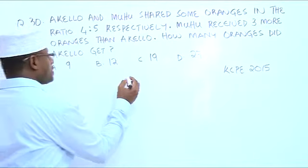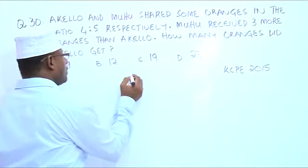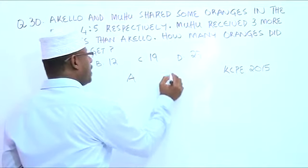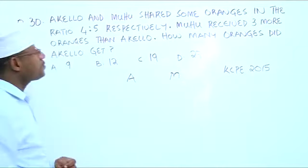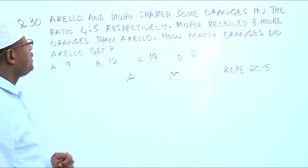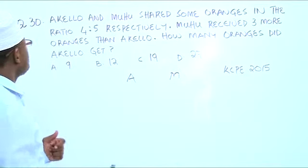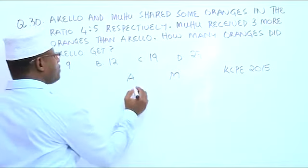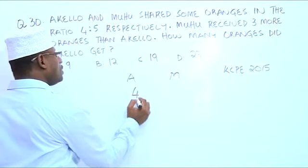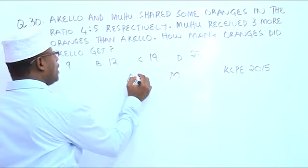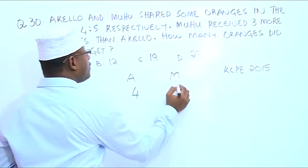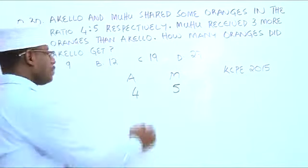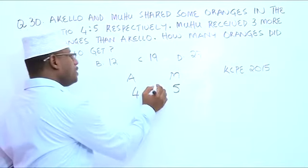We have 2 persons: Akelo and Muhu. They shared their oranges in the ratio of 4 is to 5 respectively. So it means 4 is for Akelo and 5 is for Muhu — 4 is to 5.